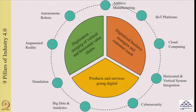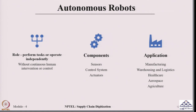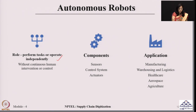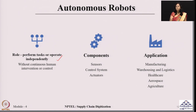Our next pillar of Industry 4.0 is autonomous robots, and these are a very important pillar. They have got huge attention in today's time, as many activities in supply chains can be done very effectively with their help. The expectation from autonomous robots is that they can perform a given task or complete a given job independently — meaning that human intervention or control is not required on a continuous basis, but just by simple monitoring this can be done effectively.